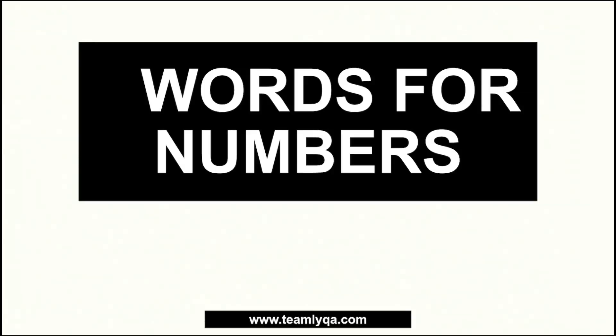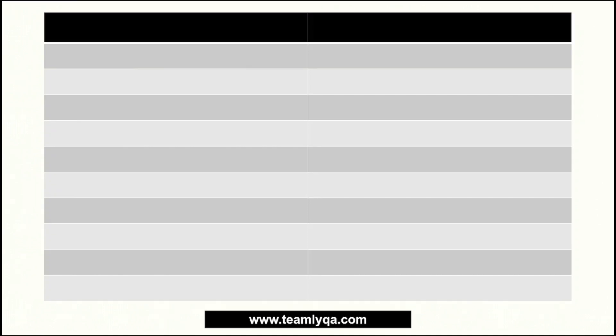Okay, so this is our lecture on Words for Numbers. The concept is there are certain words that mean numbers, but not the direct written equivalent of them. So when you spell T-E-N, that's 10 — we're not going to talk about those. These are special cases. I have a table right here with the word and its equivalent number or meaning.